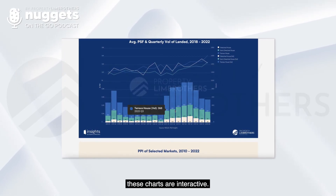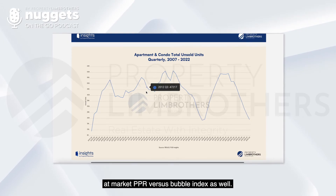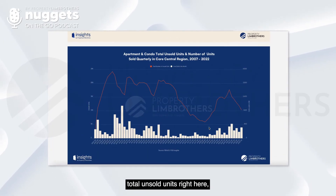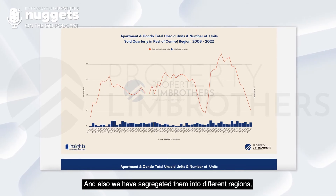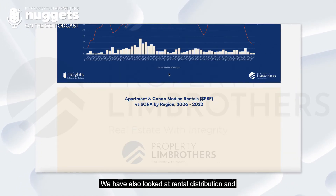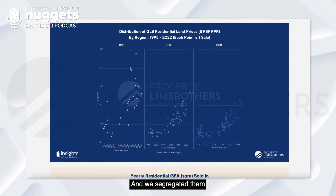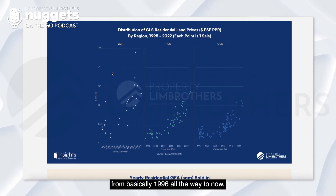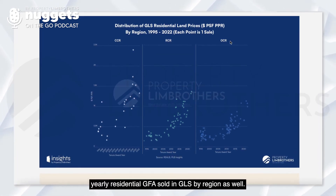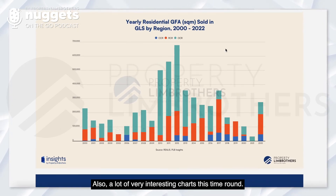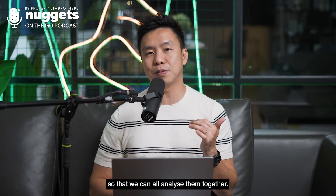The charts are very interactive — you can play around with them, hover over them, and look at different indexes. We've done a market PPR versus bubble index, total unsold units, volume performance vis-à-vis the price index, and segregated them by region — RCR, OCR, and CCR. We've also looked at rental distribution, GLS residential land PPR pricing from 1995 to date, and yearly residential GFA sold in GLS by region.